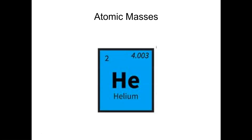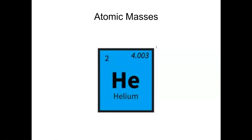Just to remind ourselves, when we look on the periodic table — here's an example for helium — we see the elemental symbol, perhaps the name, and the atomic number. But then the other thing that is always there is the atomic mass. For helium, that happens to be 4.003. That number does not represent the mass of any one particular isotope, but rather it is a weighted average of all the naturally occurring isotopes of a given element based on their abundance. So the question is: if we know all that information, how do we calculate an atomic mass?